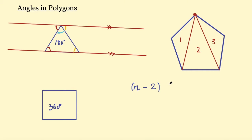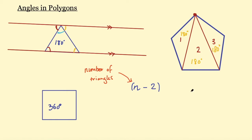That's important because it helps us figure out what the angles inside this pentagon will add up to. The first triangle is going to be 180 degrees, the second triangle is also 180 degrees, and the same with the third one. So I've got three triangles and all of their angles add up to 180 degrees each. Therefore the angles inside this pentagon must be 180 degrees times three — or times the number of triangles. Since the number of triangles is the number of sides minus two, we can multiply that by 180 to get the total of the angles inside the pentagon.